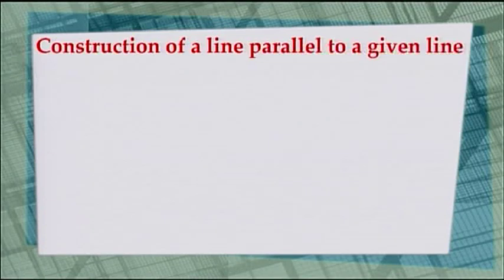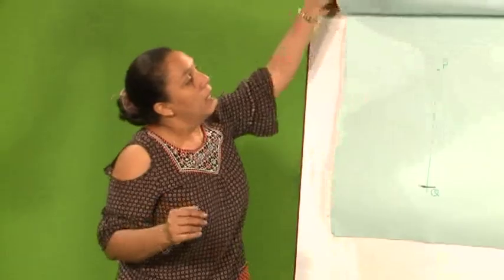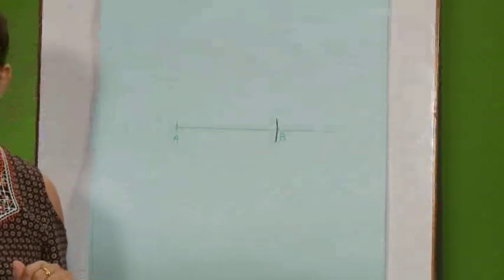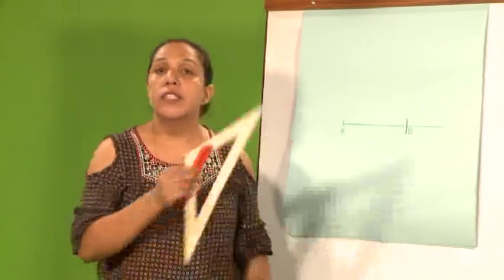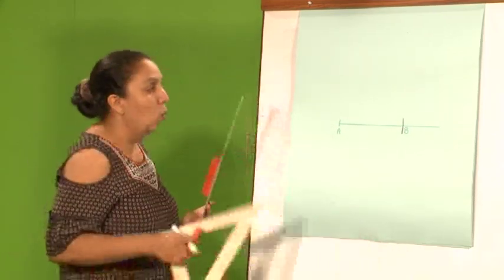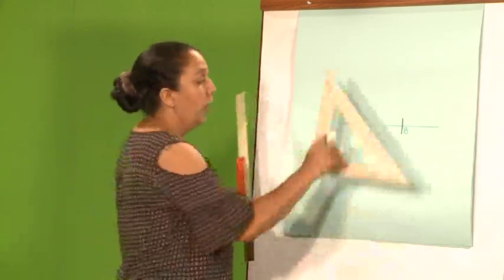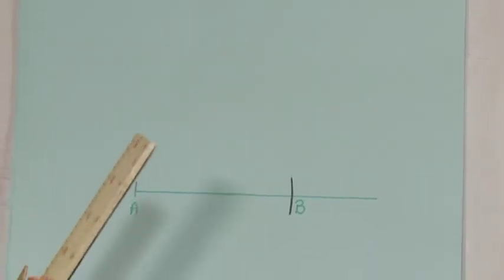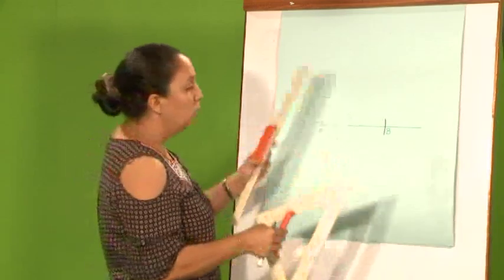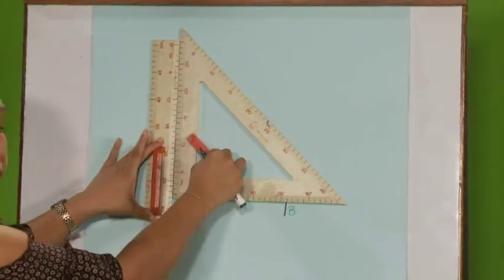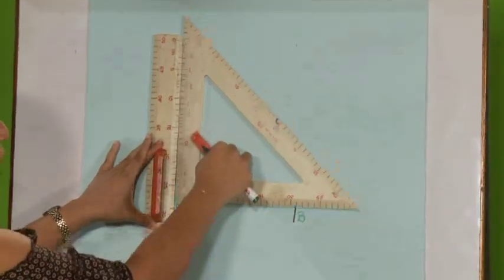Now, let's move on to the construction of a line parallel to a given line. To construct parallel lines, we are going to use the set square and ruler. First, place the set square on the line. The ruler is always placed perpendicular to the line, so you've got your ruler perpendicular and the set square on the line. Then you just need to move either up or down.